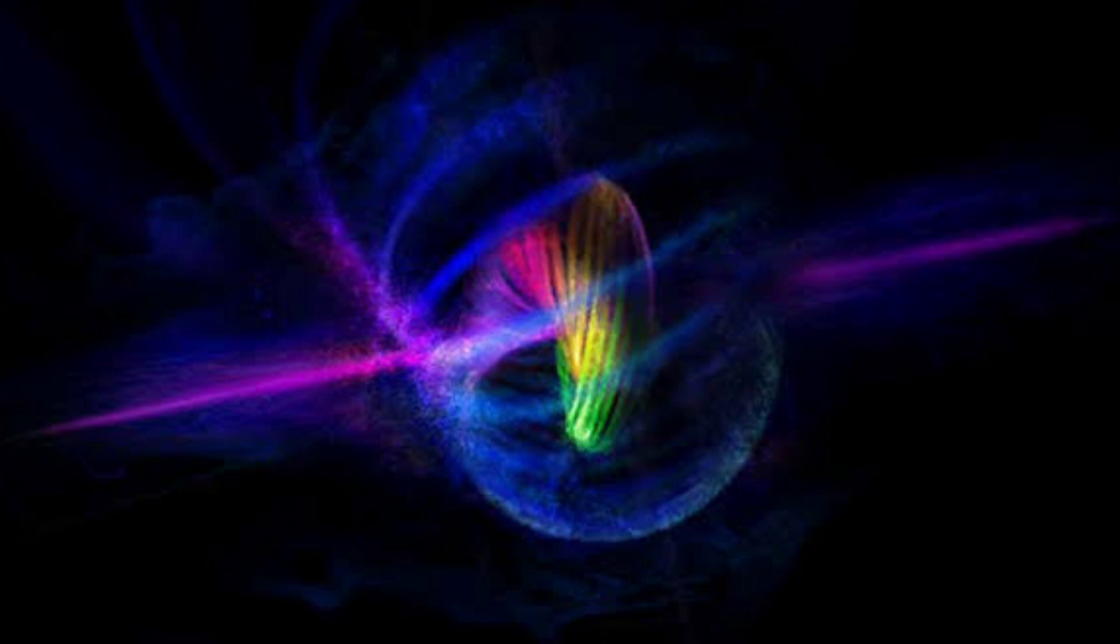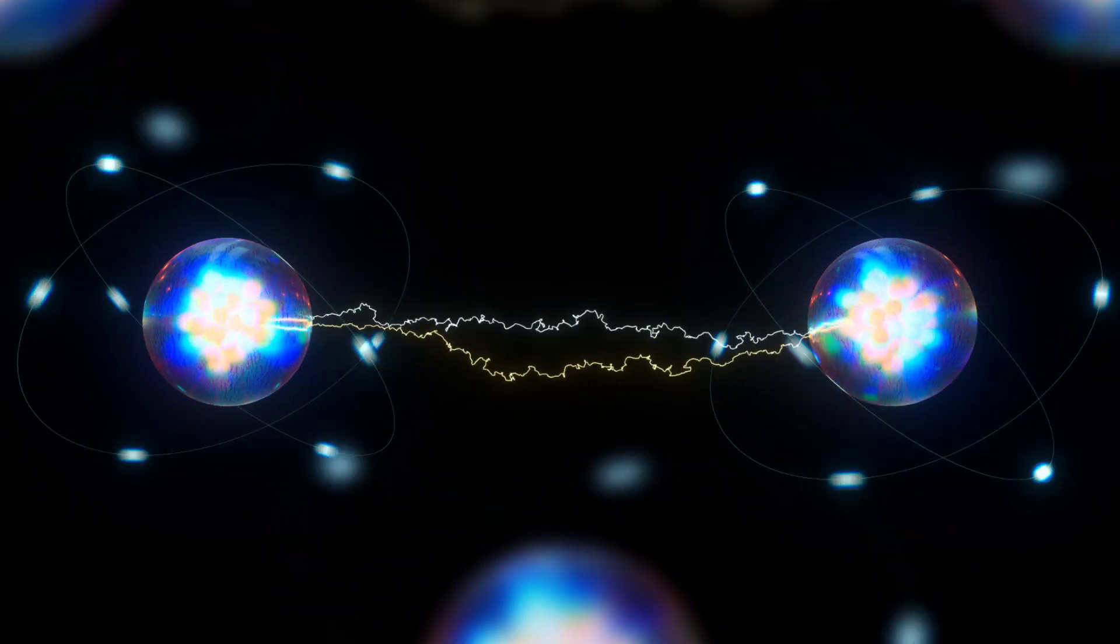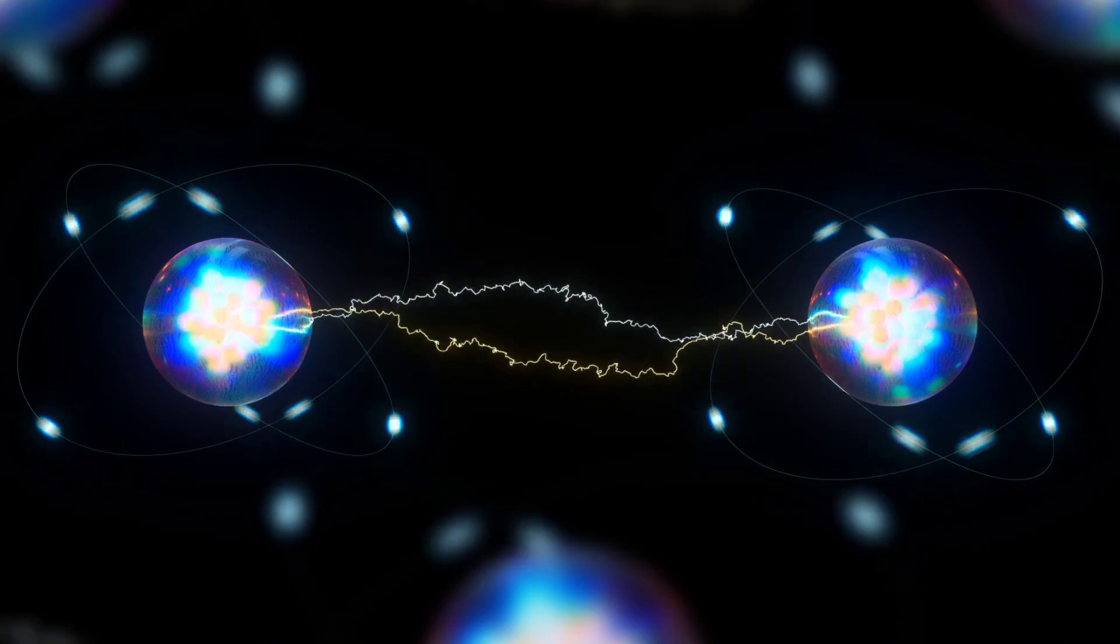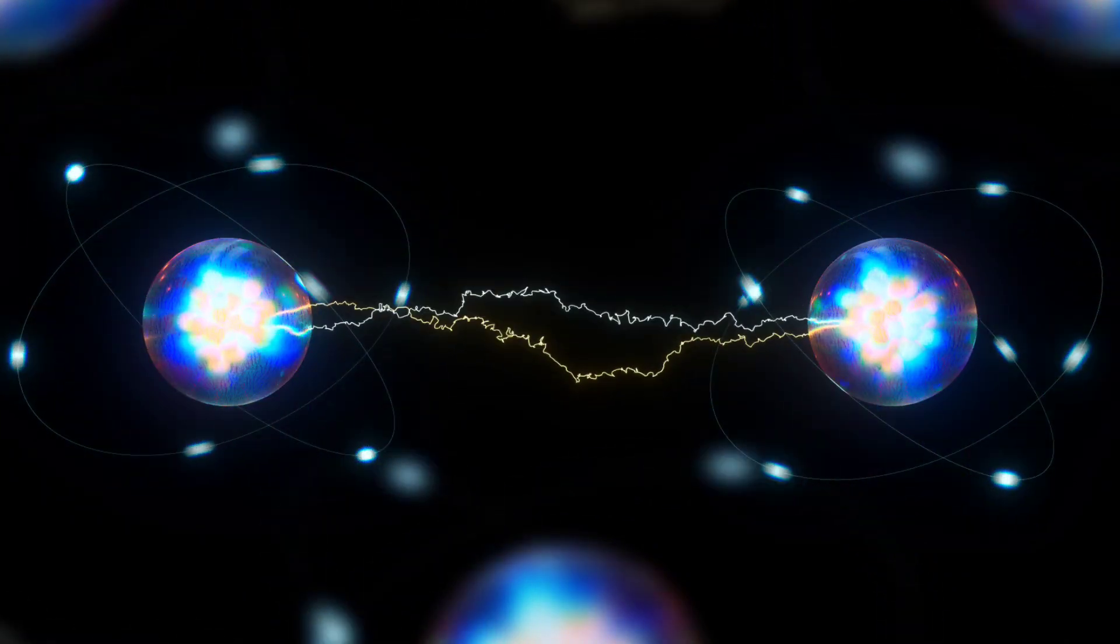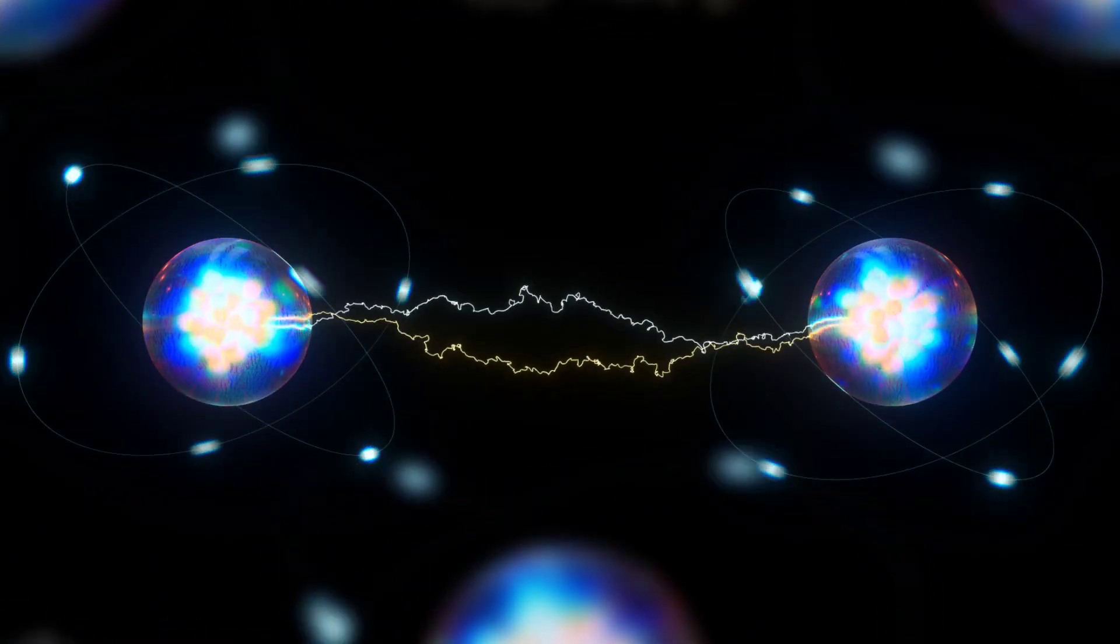Initially, the system was in a frozen quantum state known as a spin-Mott insulator, where particles are localized and unable to move freely. However, with precise adjustments, the two components began flowing in opposite directions with perfect synchronization.